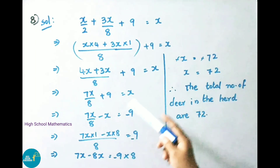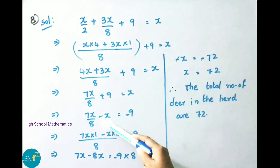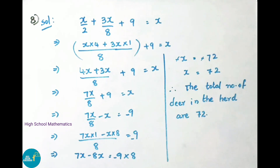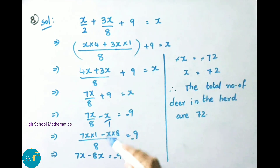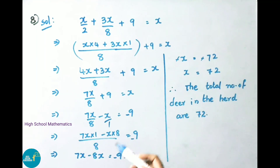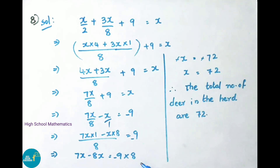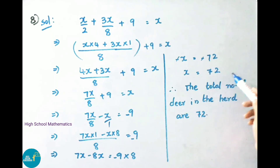Transposing x to the left side: 7x by 8 minus x equals minus 9. Taking LCM of 8: 7x minus 8x over 8 equals minus 9, giving minus x by 8 equals minus 9. Transposing 8 to the right: minus x equals minus 72. Both sides minus cancel, so x equals 72.